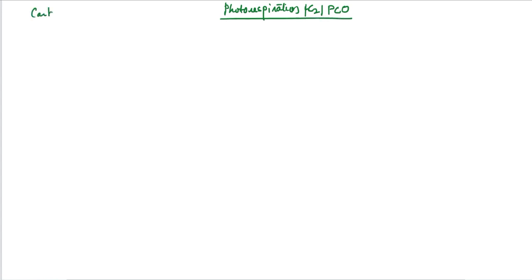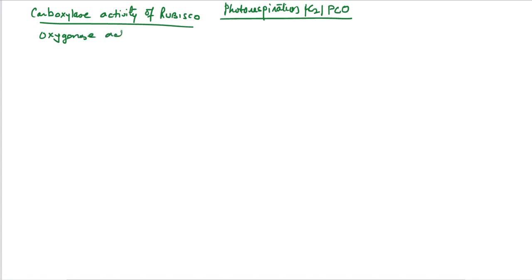Today we will study about photorespiration, which is also known as the C2 cycle or photosynthetic carbon oxidation. In the last video we studied the carboxylase activity of RuBisCO; today we will study the oxygenase activity of this enzyme.